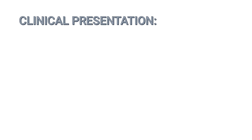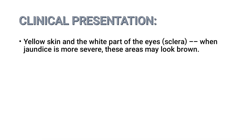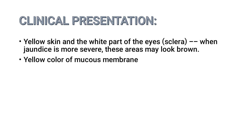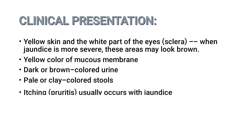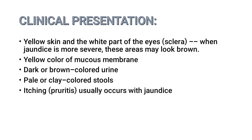In terms of clinical presentation, the patient will have yellow skin and yellow sclera. When jaundice is more severe, these areas may look brown. There will also be yellow coloration of mucous membranes, dark or brown-colored urine, pale or clay-colored stools, and itching (pruritus) due to the increased level of bilirubin.